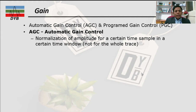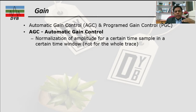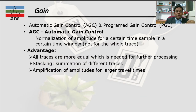Let's start with gain. There are two types: automatic gain control and program gain control, called AGC and PGC. AGC is the normalization of amplitude for a certain time sample in a certain time window — not for the whole trace. In AGC, you specify a certain range of window and enhance the amplitude of the trace. One advantage is that all the traces are more equal, which is needed for further processing.